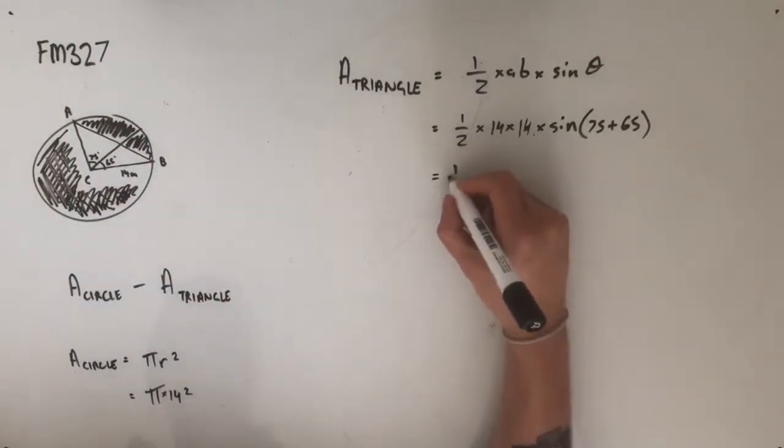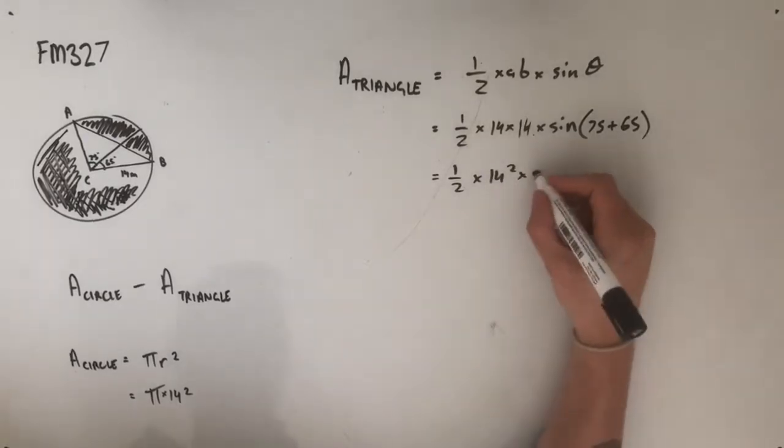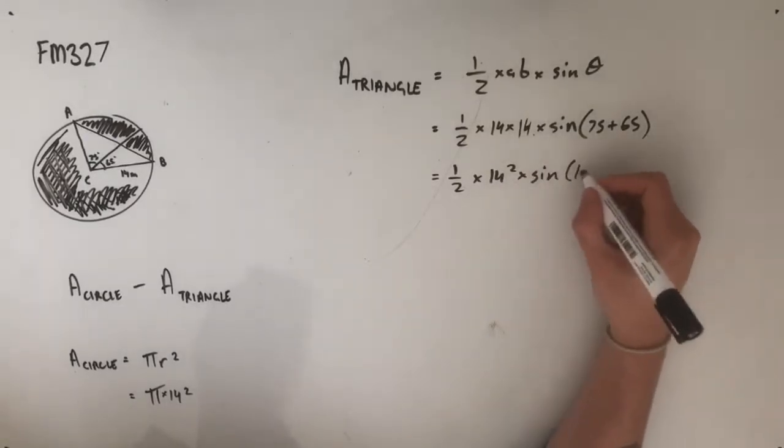So simplifying that down a bit, we get half times 14 squared times sine 140 degrees.